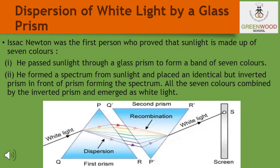He found a beam of white light emerging from the other side of the second prism. This observation gave Newton the idea that sunlight is made up of seven colors — that is the proof that sunlight is made up of seven colors. Any light that gives a spectrum similar to that of sunlight is referred to as white light.